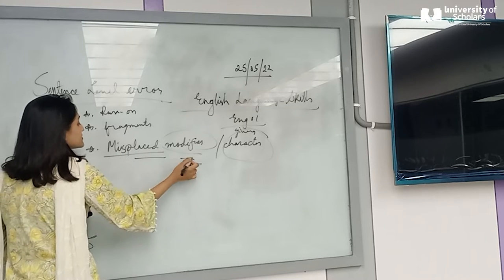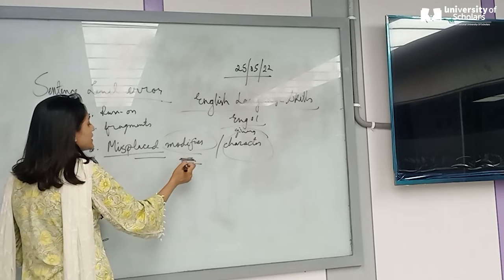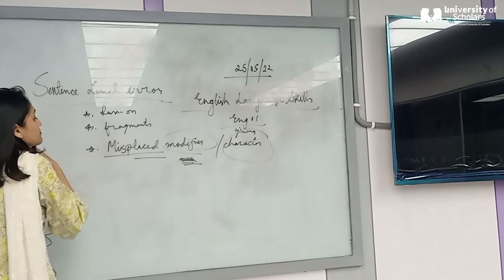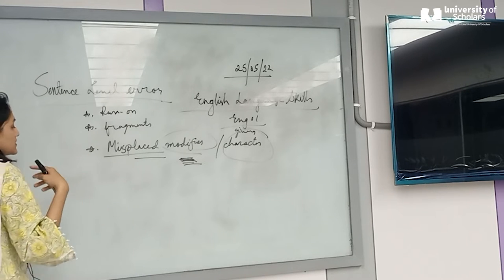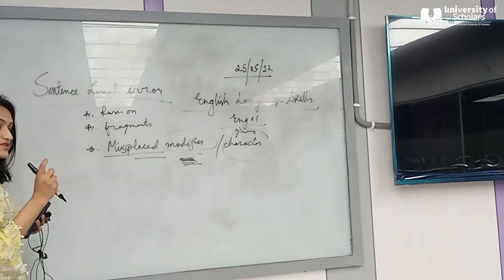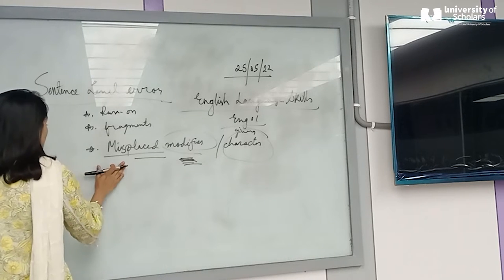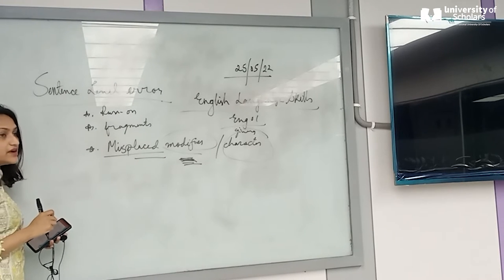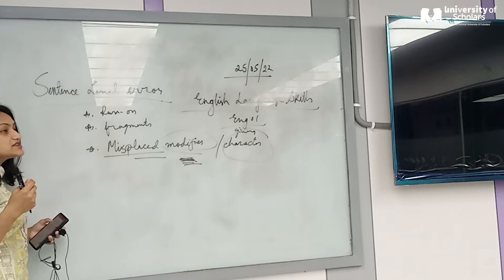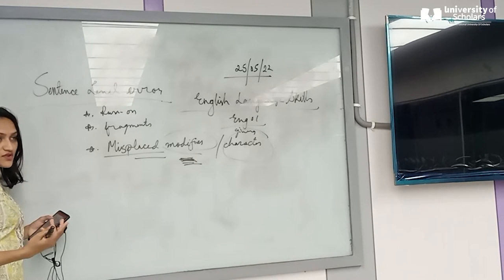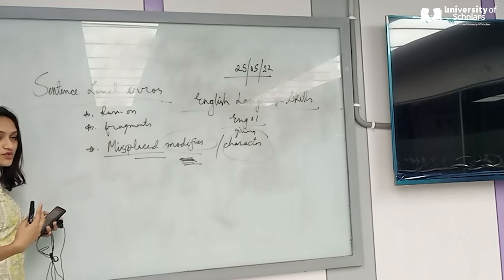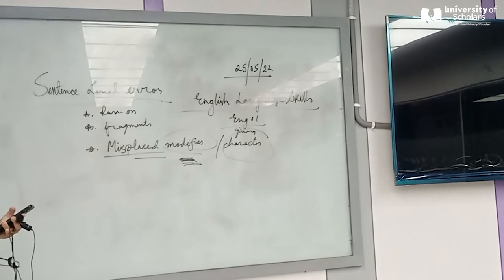Sometimes we make a mistake by misplacing the modifier, because if you change the place of a modifier, the sentence meaning can change. A word, clause, or phrase that is put in the wrong place is called a misplaced modifier. The sentence structure will still be correct, but the meaning you are trying to convey will change.